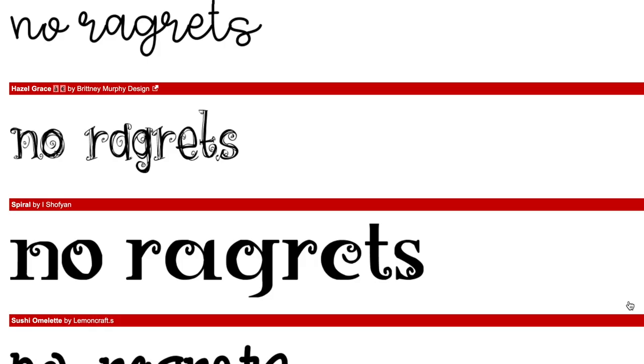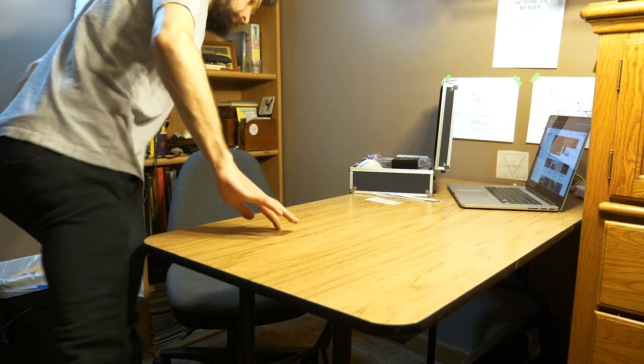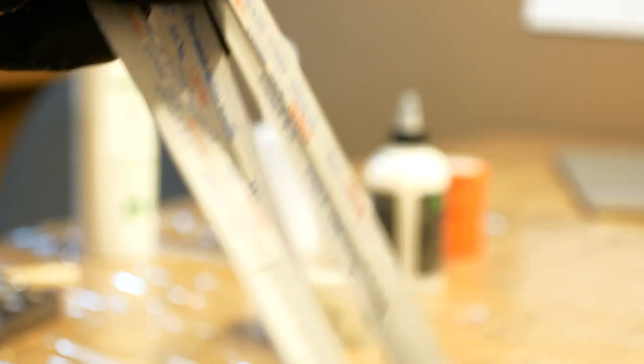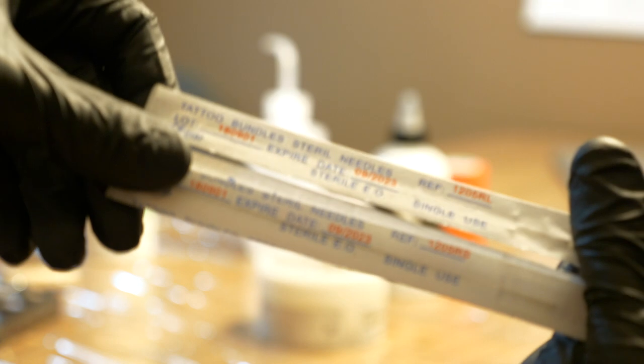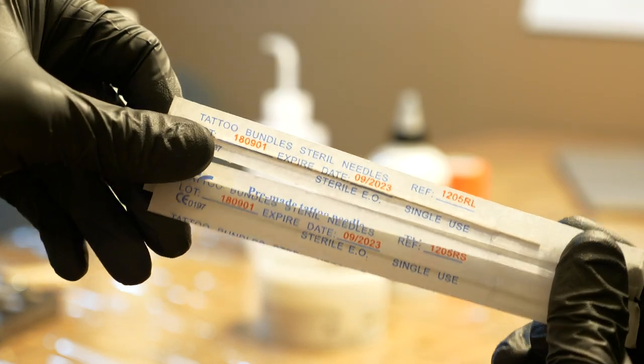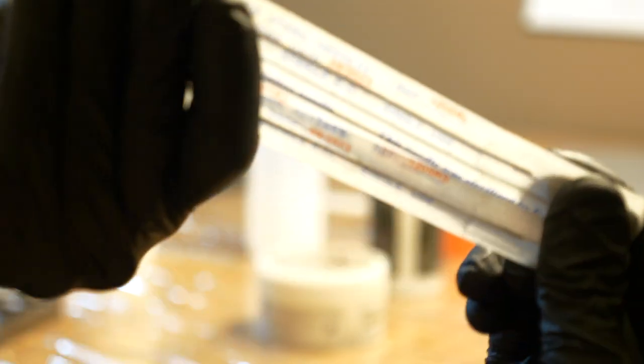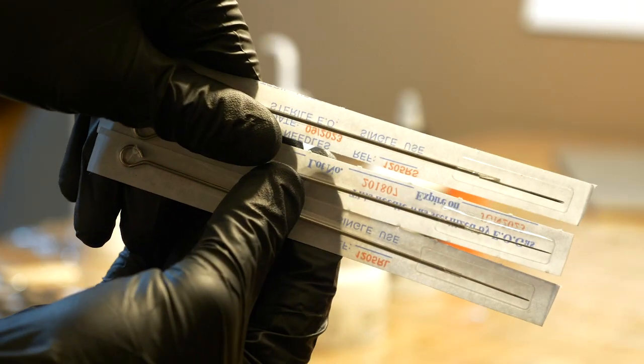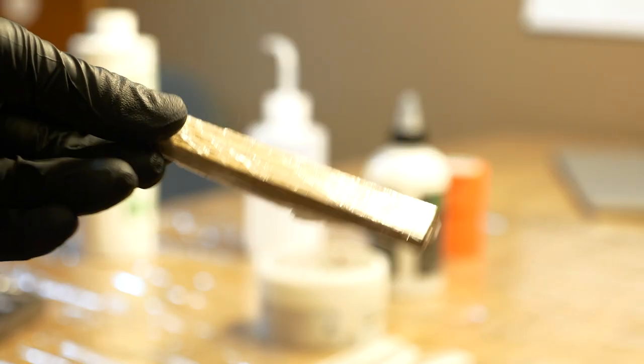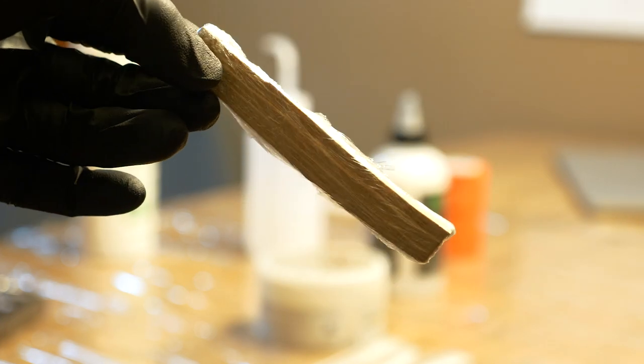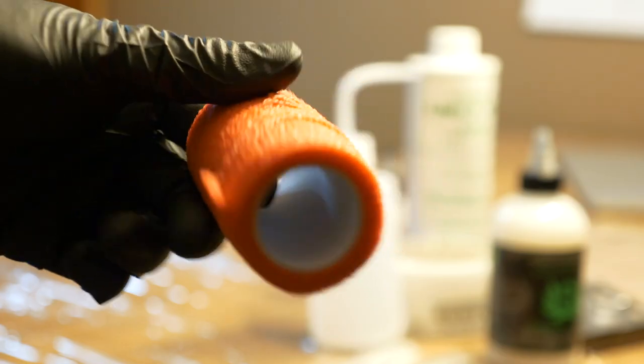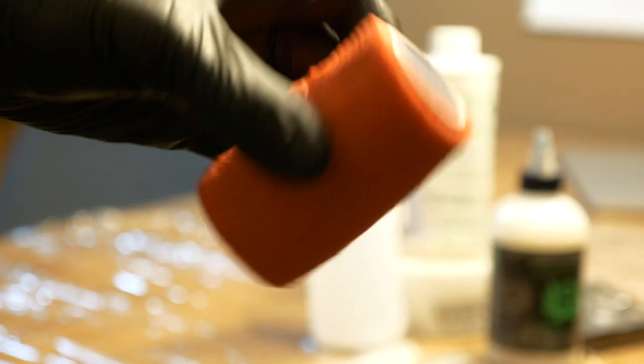Once I get the design figured out, I like to go through my supplies just to make sure I got everything I need. Today we're going to be using two different types of needles: a five round liner and a five round shader. Got an extra liner if shit hits the fan and I gotta act quick. Next thing is this incense type piece of wood that I use for a grip, and I use medical type tape to put the needle to the wood.